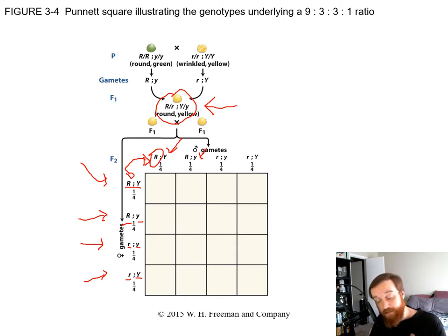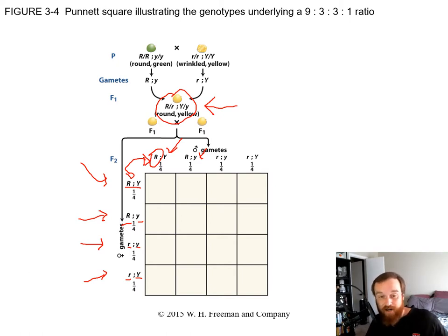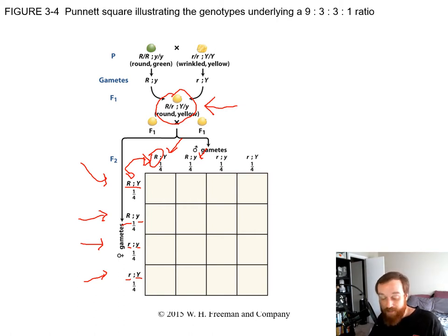Gametes only provide half the information from their parents, because if you doubled your genetic information every time you had offspring, after 50 generations there would be thousands of chromosomes inside you — which is not productive.